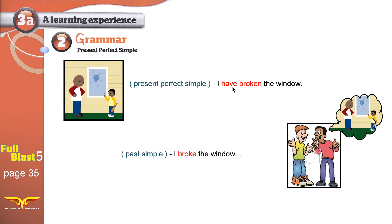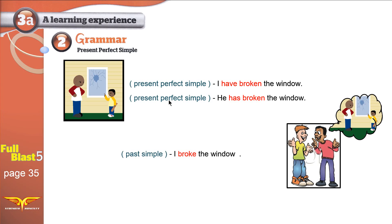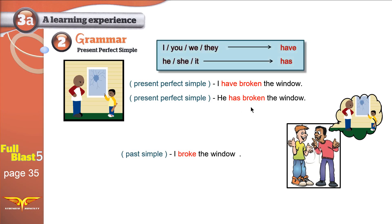We use 'have' with I, you, we, and they. 'I have broken the window. You have broken the window. They have broken the window. We have broken the window.' When we use he, she, or it, we use 'has' instead of 'have.' 'He has broken the window. She has broken the window. It has broken the window.'